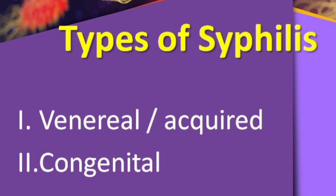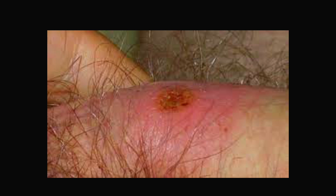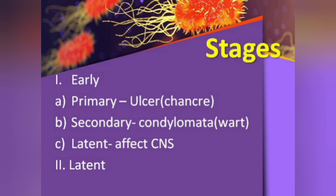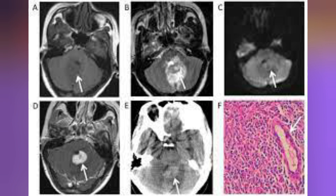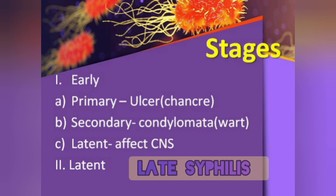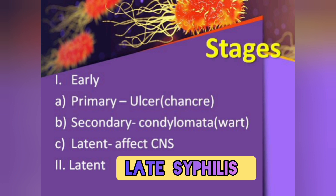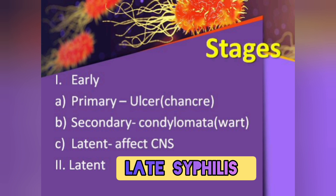In terms of stages, there are early stages and a latent stage. In the early stage, it primarily starts with an ulcer — they call it a chancre — with a wound-like appearance, which later develops into condylomata. In the latent stage, it slowly starts affecting the brain and central nervous system. This latent stage is sometimes called late syphilis, and it can persist for more than two years without any symptoms.